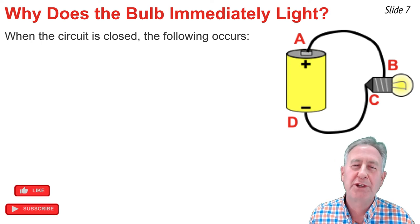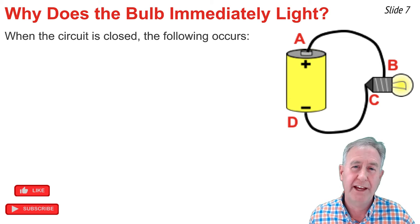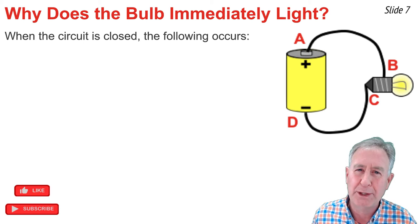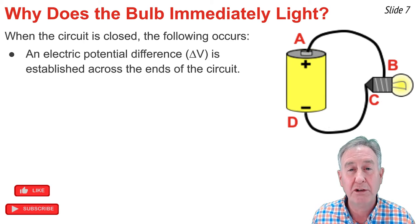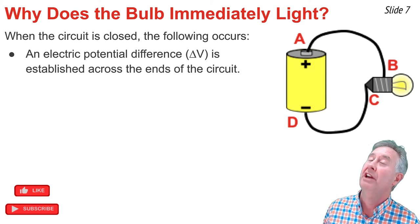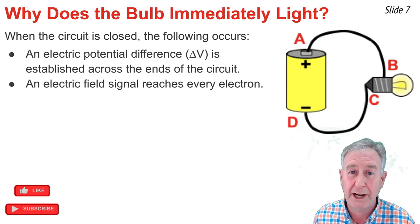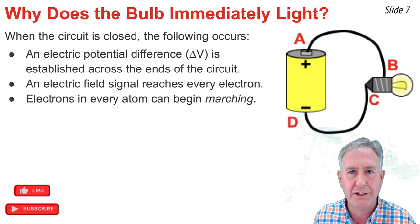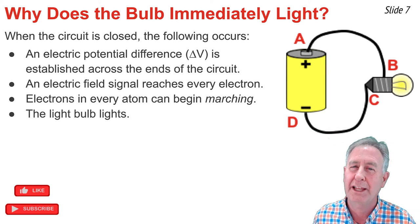Students are troubled by the question of why does a light bulb immediately light when you close a circuit? When you flip the switch or make the connection of that last wire to the terminal of the battery, we observe the light bulb immediately lights. When you make the final connection, there are four things that take place. First, an electric potential difference is established across the two ends of the circuit. Second, an electric field signal reaches every electron within the wires and bulb of that circuit. Third, the electrons begin moving everywhere — all along that circuit, every wire, every atom, every filament. And finally, the light bulb lights.